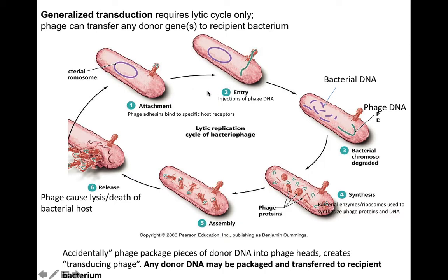In generalized transduction, one of these fragments of the bacterial donor chromosome will get packaged into a head. So one of the released phage will carry bacterial chromosomal DNA. Even though that little phage isn't carrying phage DNA, it's still infectious — it can bind to a neighbor or recipient bacterium and inject the donor DNA. Through homologous recombination, that donor DNA can get inserted into the recipient's chromosome. So again, horizontal gene transfer occurs where the recipient bacterium now carries donor DNA. In generalized transduction, any donor DNA may be packaged and transferred to the recipient bacterium. That's relatively straightforward.